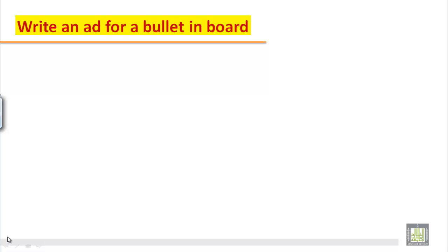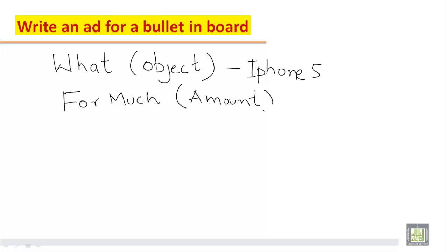Usually an ad consists of just four or five sentences. It's not too long. So the important things that you have to keep in mind is what - what you want to sell. That is the object, the object that you want to sell. For example here in this unit we will practice writing an ad for iPhone 5. Second thing is for how much you want to sell this iPhone. So here you will write the amount for how much you want to sell this. So this is the second important thing.